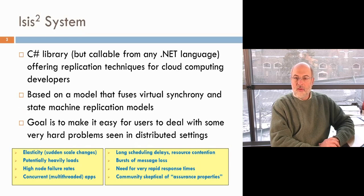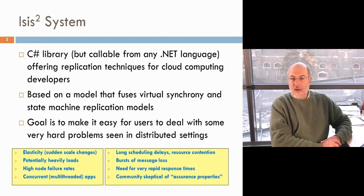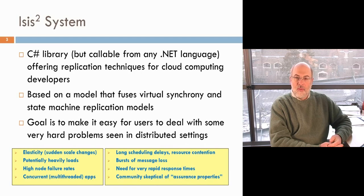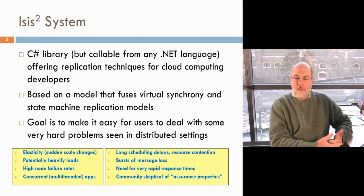It lacks commercial support, but these days that's not necessarily a terrible thing. The library is based on a model that merges two theoretically rigorous approaches to distributed computing: one called virtual synchrony and the other called the dynamic version of the Paxos state machine model. They're quite powerful with a strong mathematical background, and we can prove things about these kinds of protocols.